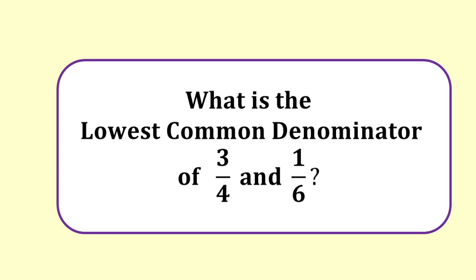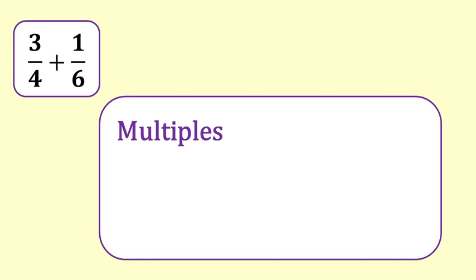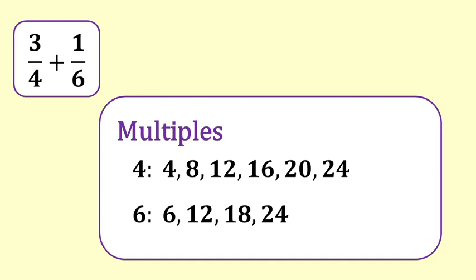The lowest common denominator is the smallest number that can be a common denominator. We find it by listing the multiples of each denominator. For four: four, eight, twelve, sixteen, twenty, twenty-four. For six: six, twelve, eighteen, twenty-four. We can stop as soon as we have a number in common. The lowest common denominator is the smallest number that is in both lists — in this case it is twelve.